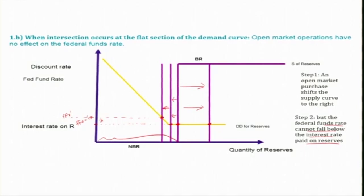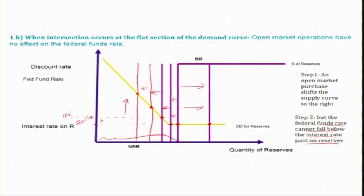If the Fed wants to keep increasing the Fed fund rate, the option is to do more and more open market sales — selling government securities to the banking system — thereby reducing reserves with the banking system. The new intersection moves further, and the equilibrium Fed fund rate keeps increasing. This is the way the Fed uses open market operations to influence the Fed fund rate — this is one of the tools.